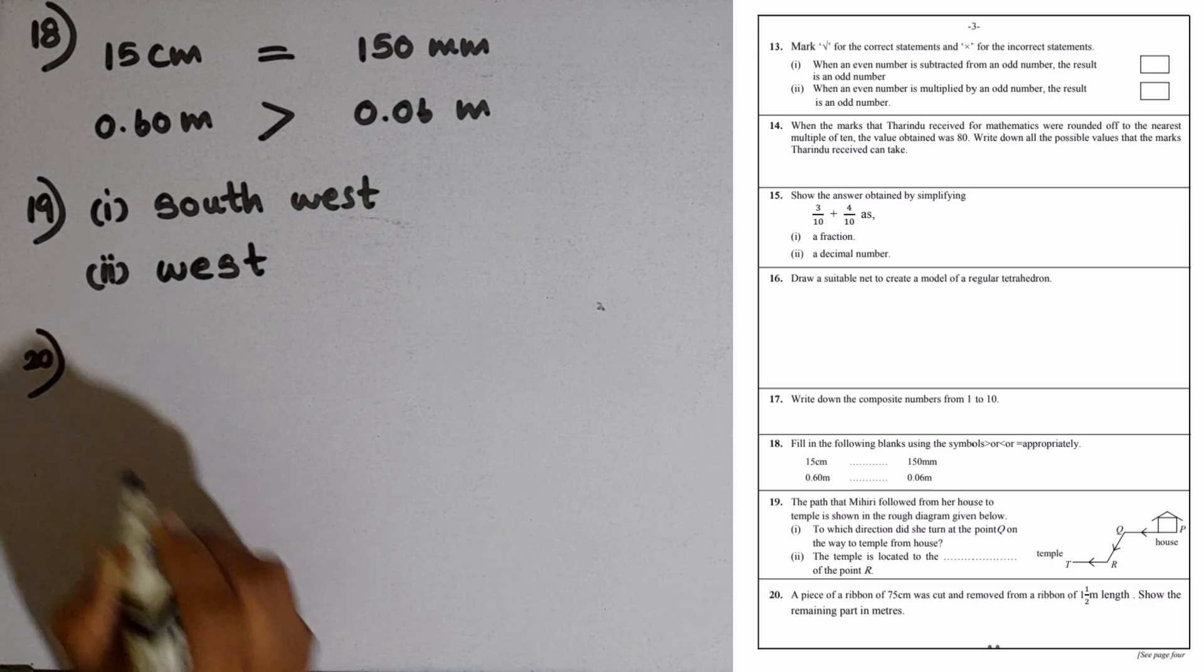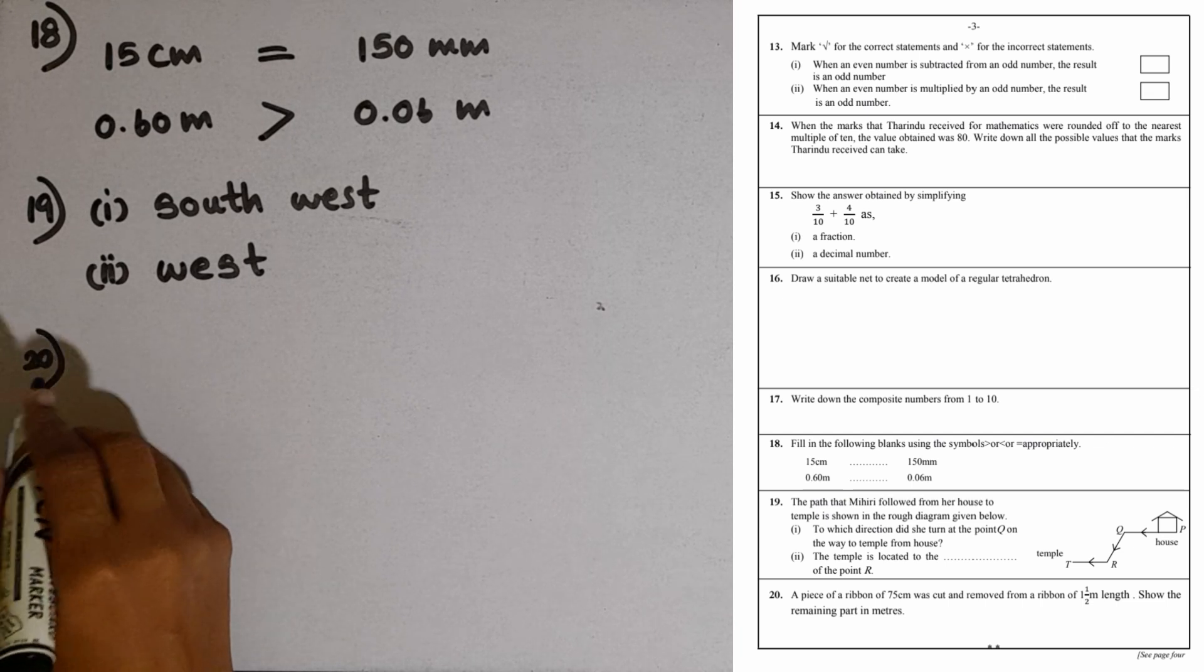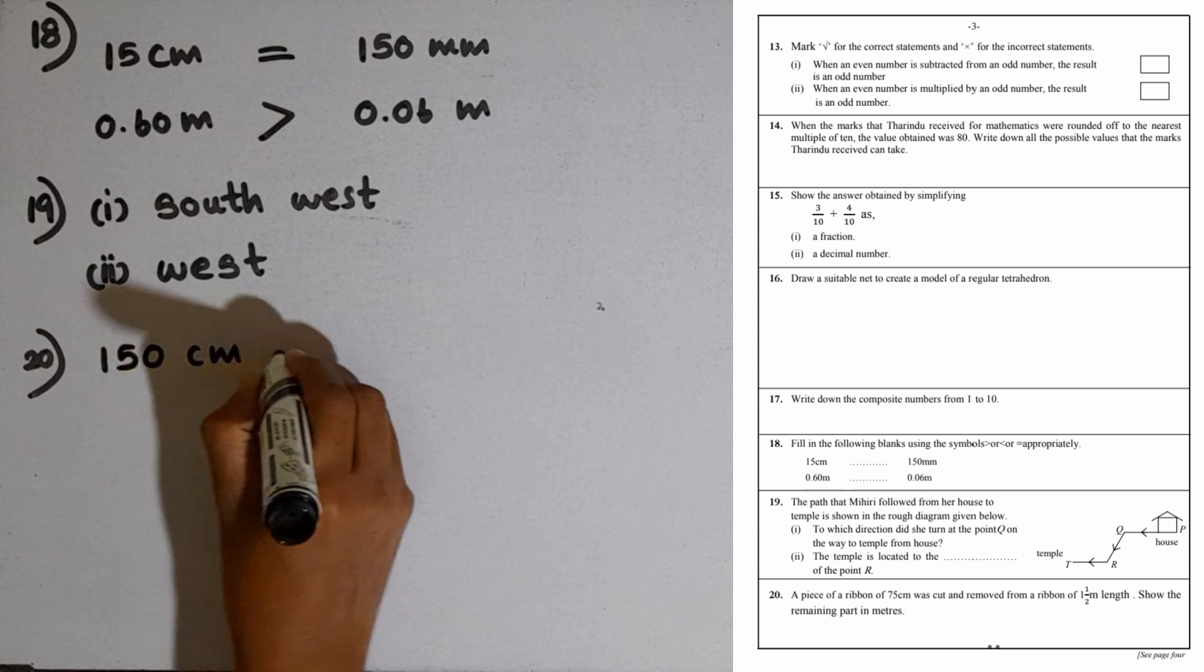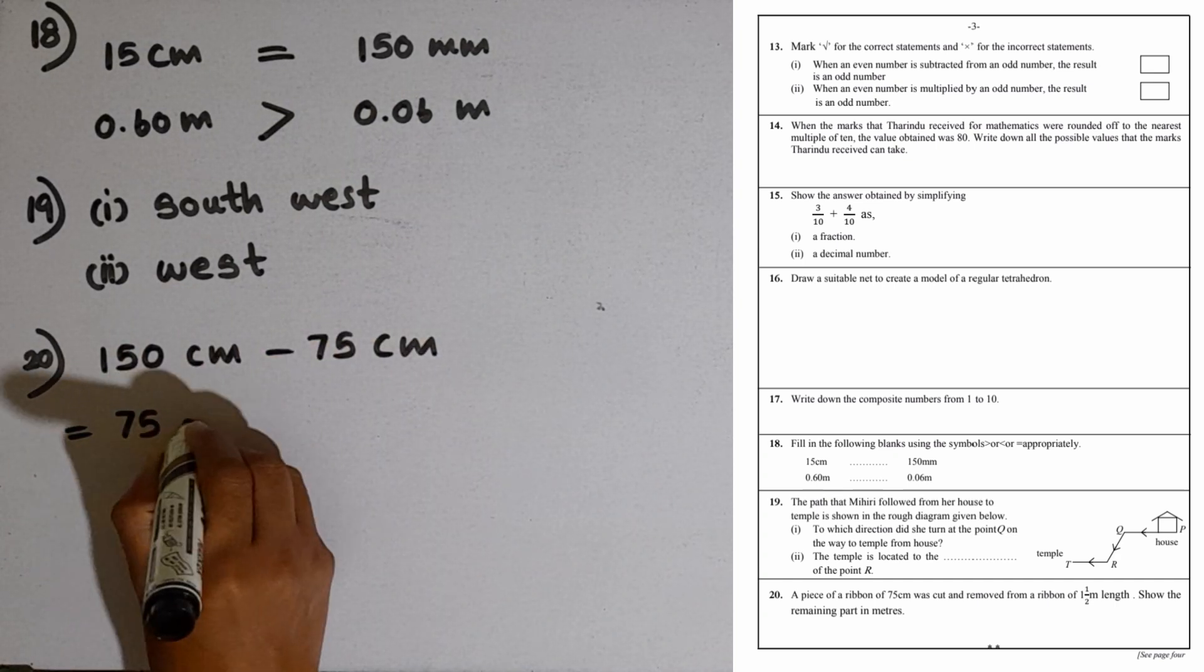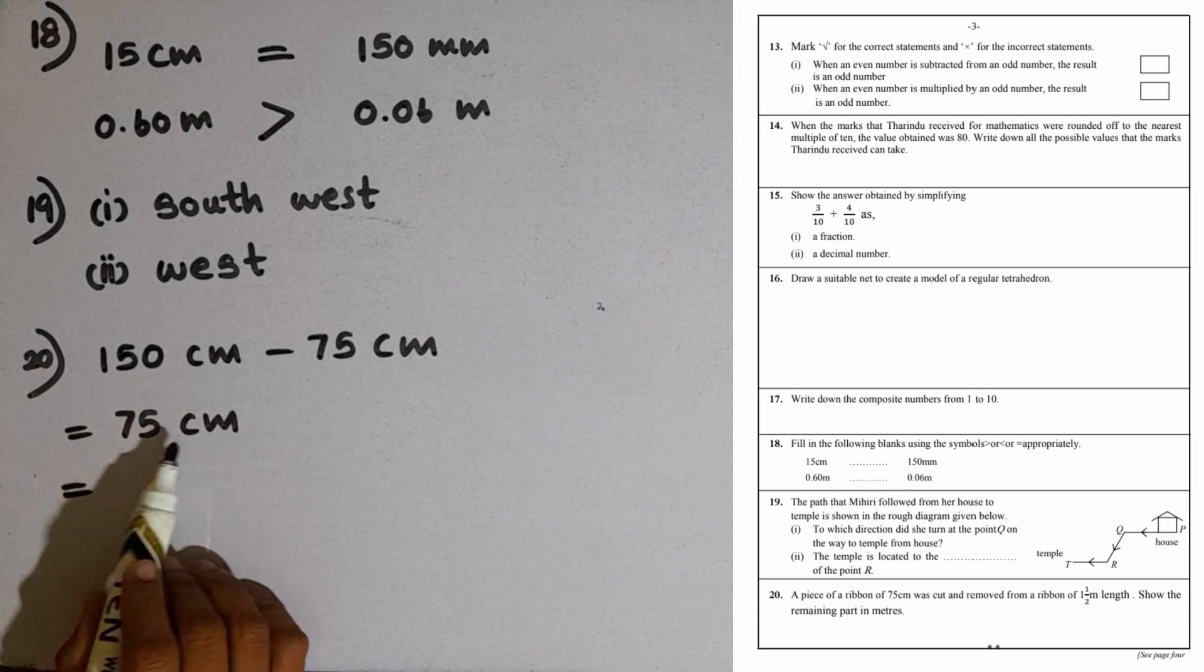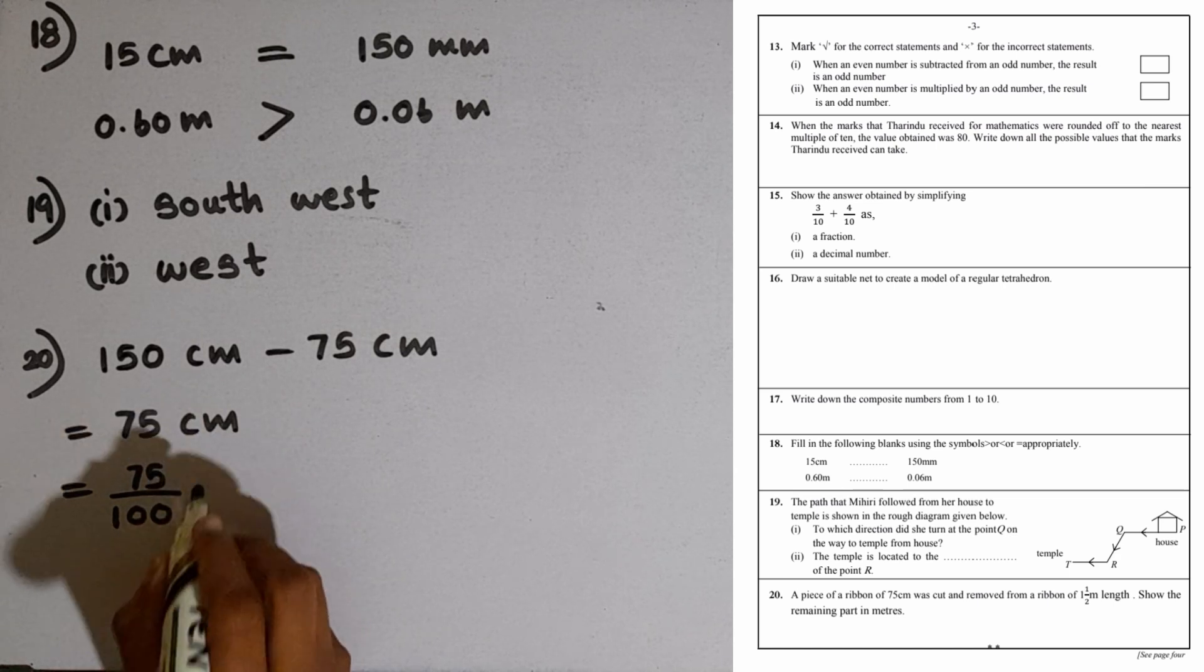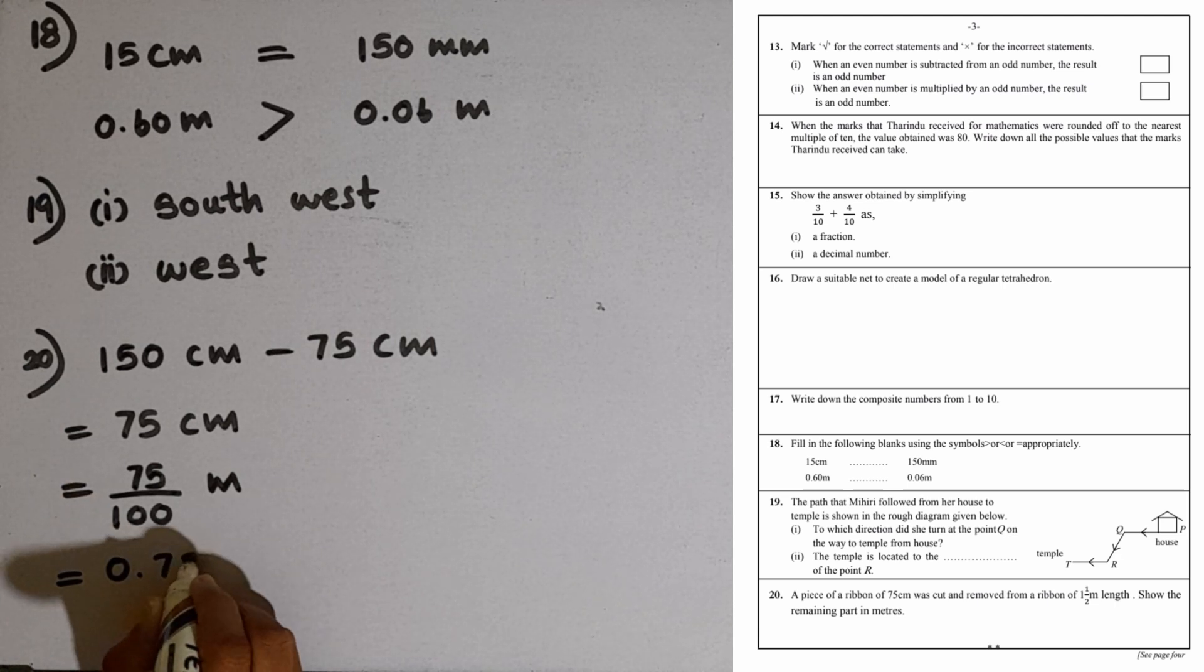Question number 20: A piece of ribbon of 75 centimeters was cut and removed from a ribbon of 1.5 meters length. Show the remaining part in meters. First we convert 1.5 meters into centimeters, that equals 150 centimeters, minus 75 centimeters. The remaining length is 75 centimeters. If we convert this into meters, we divide by 100. 75 over 100 is 0.75 meters.